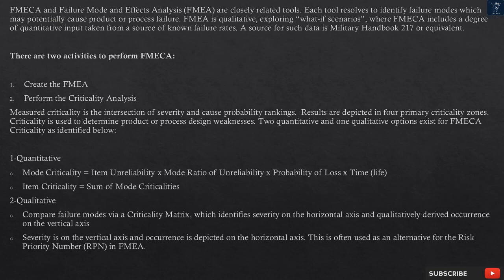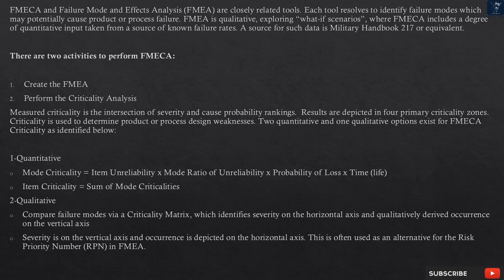Criticality is used to determine product or process design weaknesses. Two quantitative and one qualitative options exist for FMECA criticality. Quantitative: Mode criticality equals item unreliability × mode ratio of unreliability × probability of loss × time/life. Item criticality equals the sum of mode criticalities. Qualitative: Compare failure modes via a criticality matrix, which identifies severity on one axis and qualitatively derived occurrence on the other axis. This is often used as an alternative for the Risk Priority Number (RPN) in FMEA.